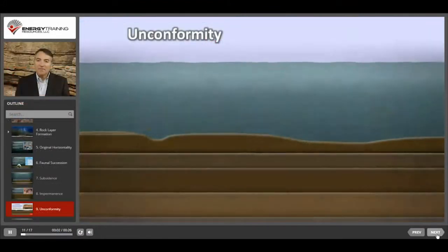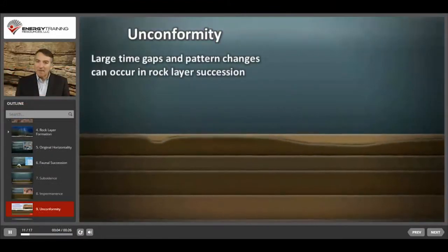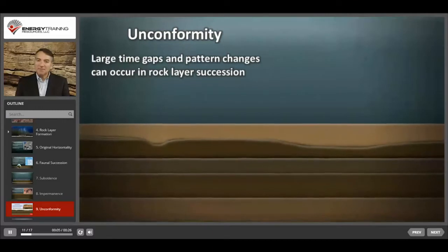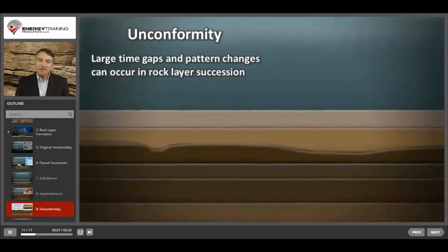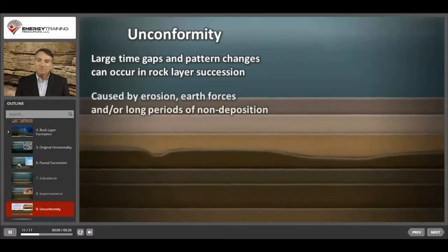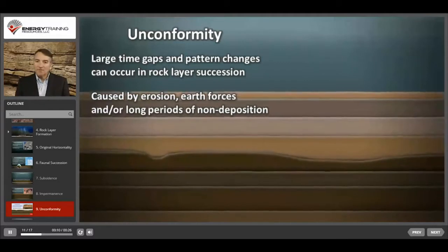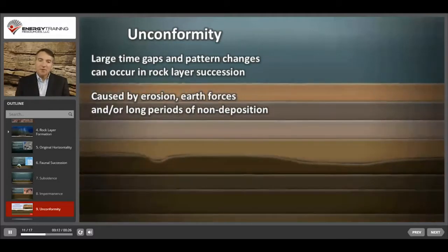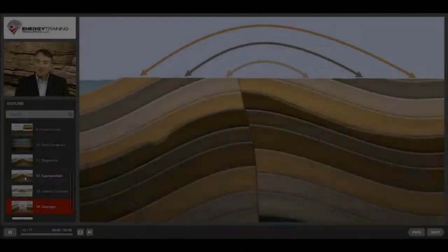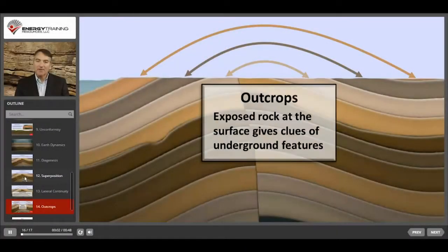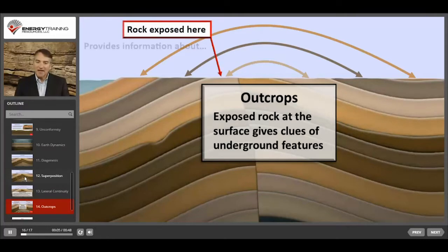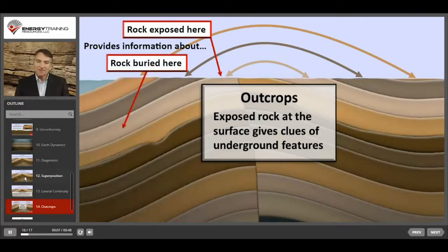Unconformities can occur. These are large time gaps or pattern changes between successive rock layers. These can occur because of erosion, earth forces such as plate tectonics, or long breaks in time where deposition did not occur. However, exposed rock at the surface, called outcrops, can provide important information about the type, age, and characteristics of the rock underground.